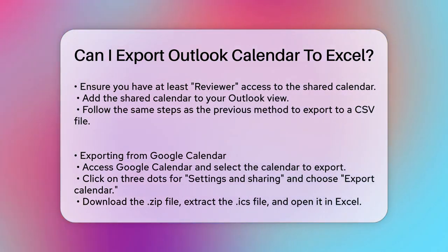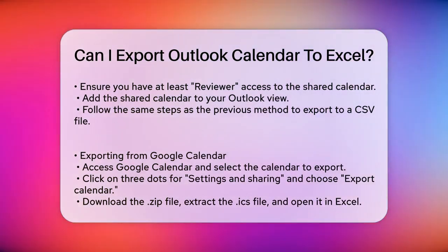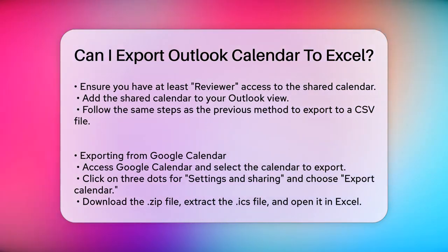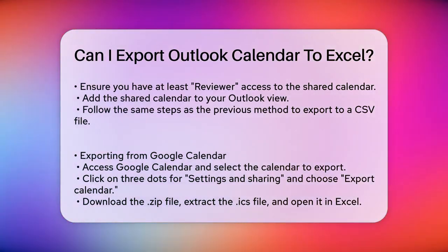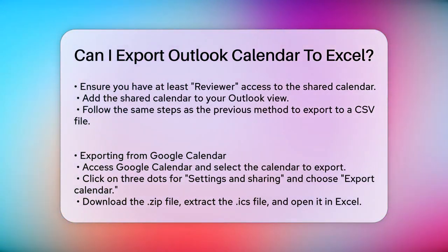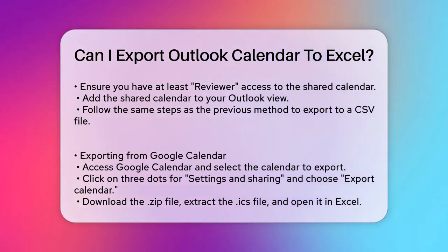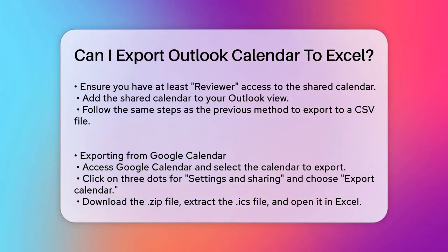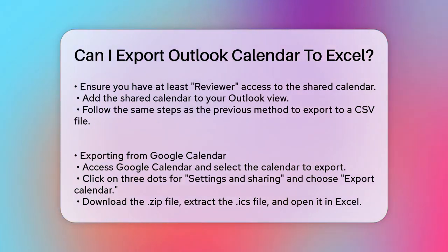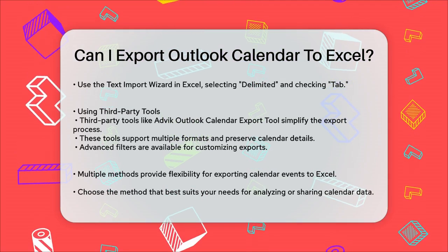Exporting from Google Calendar. If you're using Google Calendar, you can also export it to Excel. Open Google Calendar, hover over the calendar you want to export, click the three dots, and select Settings and Sharing. Then click the Export Calendar button. Download the .zip file, extract the .ics file, and open it in Excel.